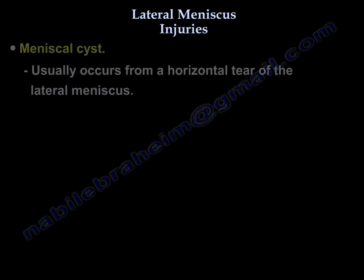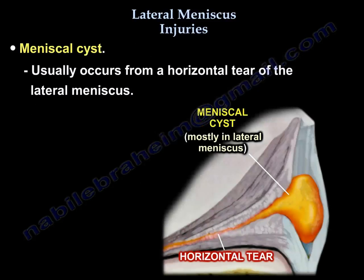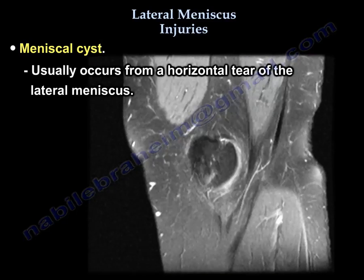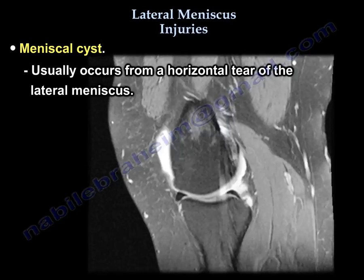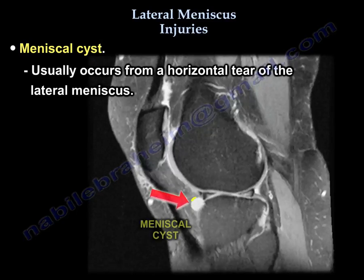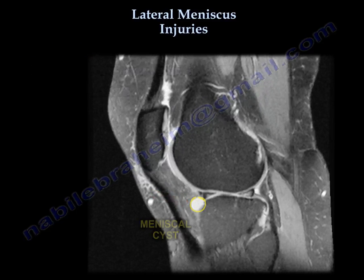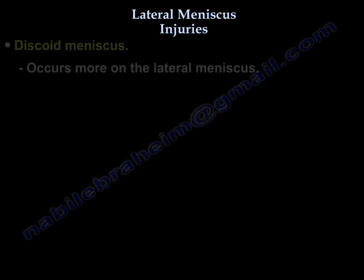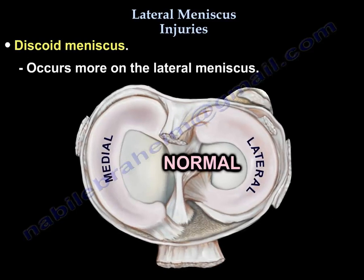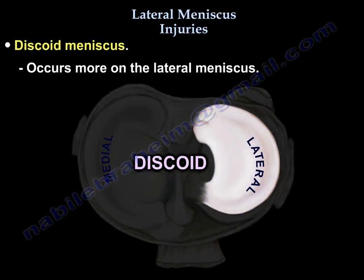Meniscus cysts usually occur from a horizontal tear of the lateral meniscus, and this is an example of a meniscus cyst. The discoid meniscus occurs more on the lateral meniscus.